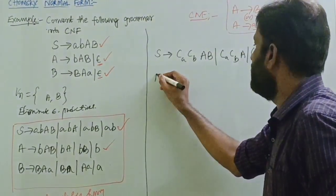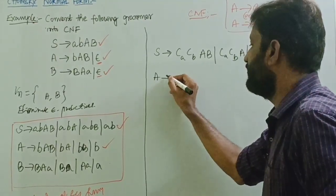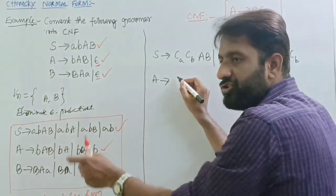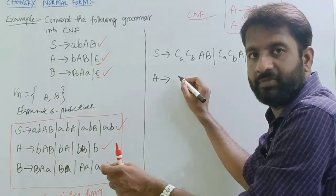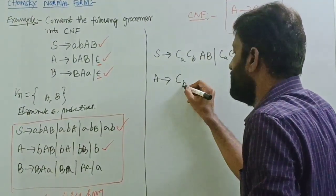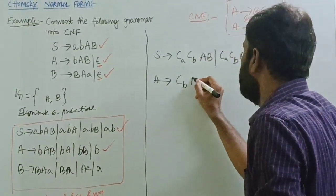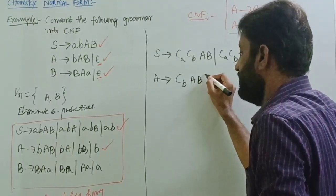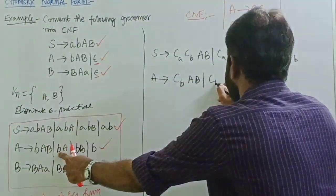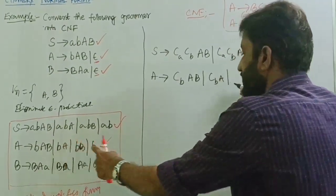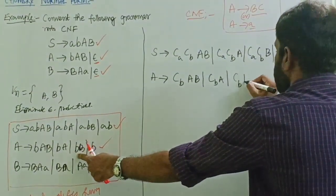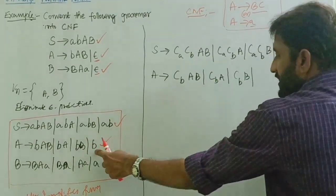Take the next production: A tends to BAB. Where there is a terminal 'a', introduce a new non-terminal CA. So we write CB A, then CA CB capital A, then CA CB capital B, then CA CB capital B, slash B. B is already in Chomsky Normal Form, so write it as it is.